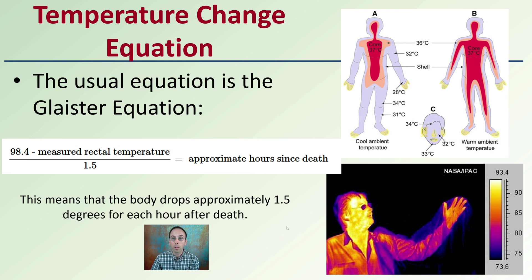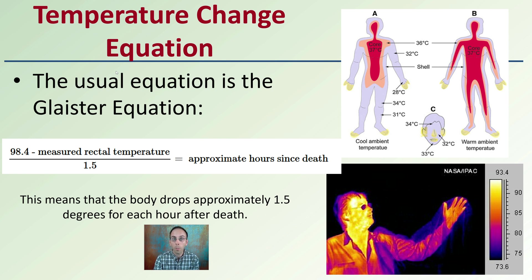Here we see the equation expressed in Celsius. We see again that over time, the core temperature — the innermost — is going to be the slowest to change. So keep in mind when taking temperature, we want to note where we're taking it. We also want to take more than just the temperature of the body — we want to consider the environment that the body was found in, to help tell the most effective story of what's going on at that particular scene.